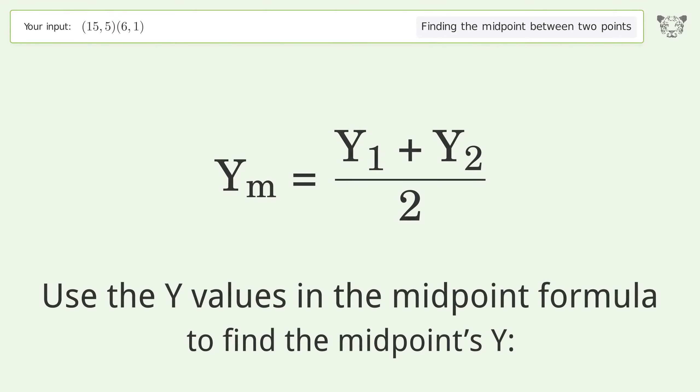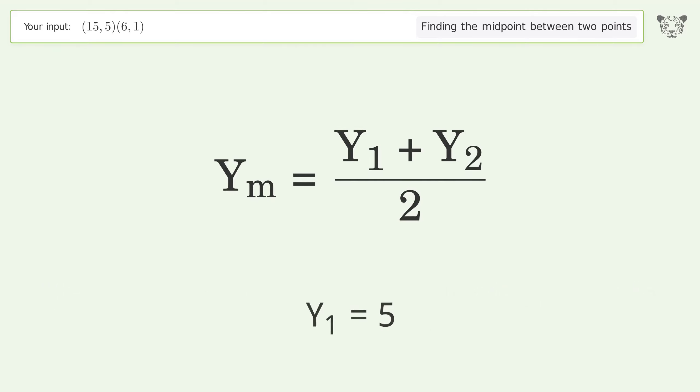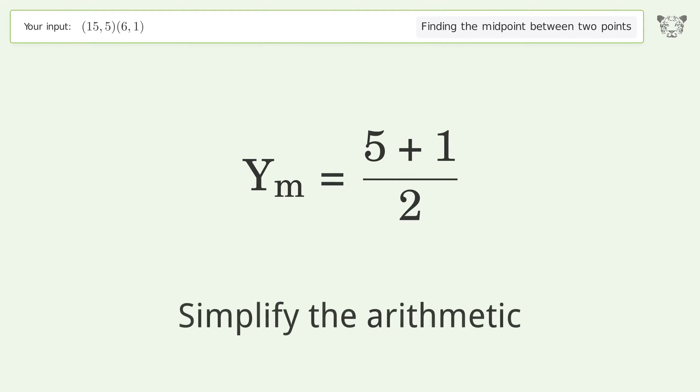Use the y values in the midpoint formula to find the midpoint's y. y₁ equals 5, y₂ equals 1. Simplify the arithmetic.